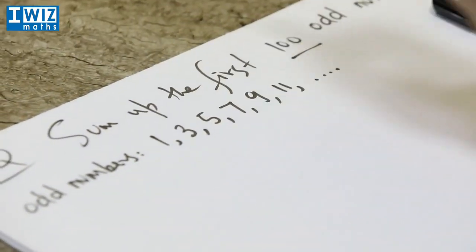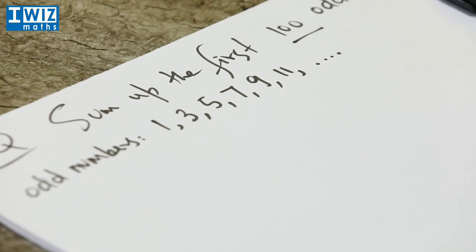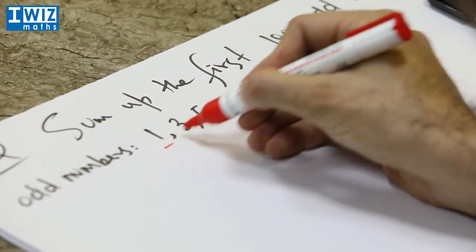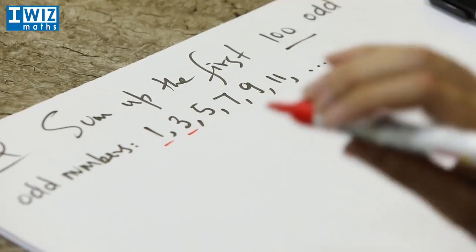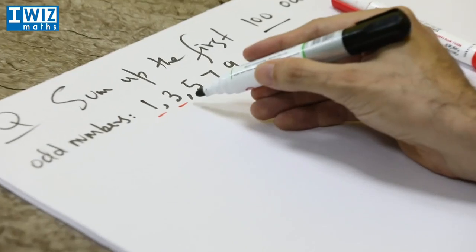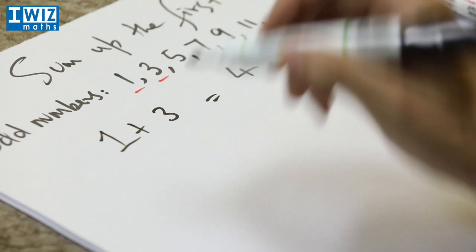Now what we'll do is we will start by asking a much simpler question which is can we sum up the first two odd numbers? So you're starting with a very simple version of the question which is the sum of the first two odd numbers and that is just 1 plus 3 is equal to 4.